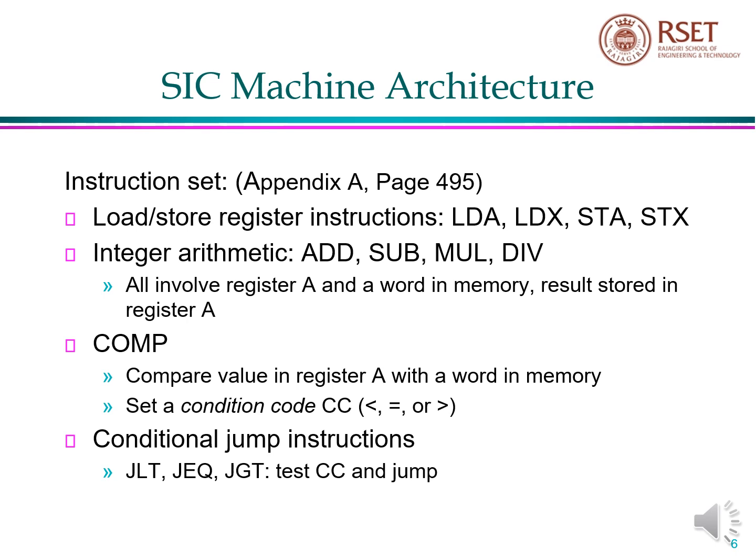Now, comparison instruction. This instruction will compare the value in register A with the value stored in memory. Depending upon the result of comparison, a condition code will be set. If register A contains a value less than that of the memory, condition code will be less. If both are equal, condition code will be equal to. If register A is having a value greater than the value in memory, greater than will be set in the condition code. Based on this condition code, there are three different types of jump instructions: jump on less than, jump on equal to, and jump on greater than.